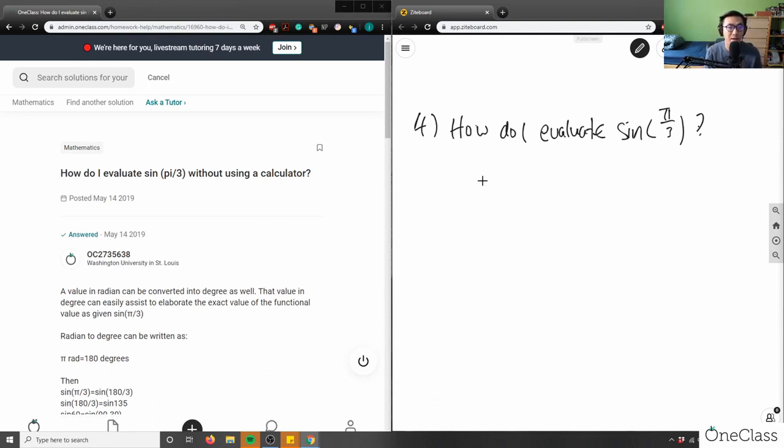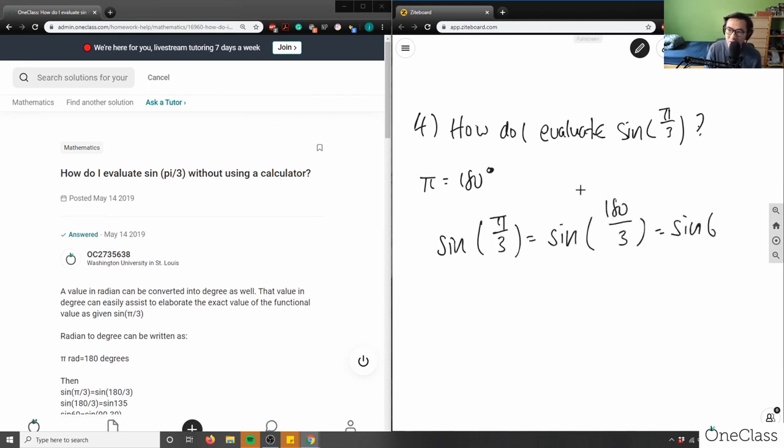So again, when we're talking about sine pi over 3, pi here equals 180, right? So let me just write this down. If pi equals 180 degrees, then sine pi over 3 equals sine 180 degrees divided by 3, which equals sine 60.